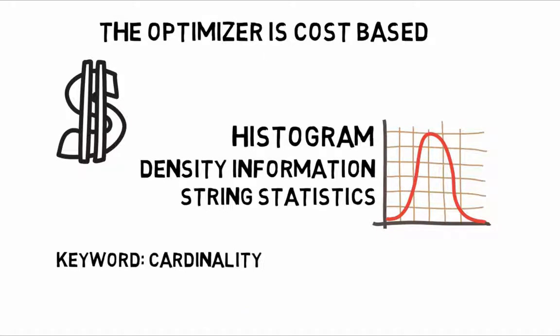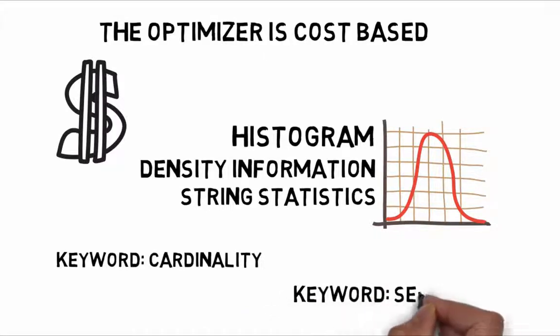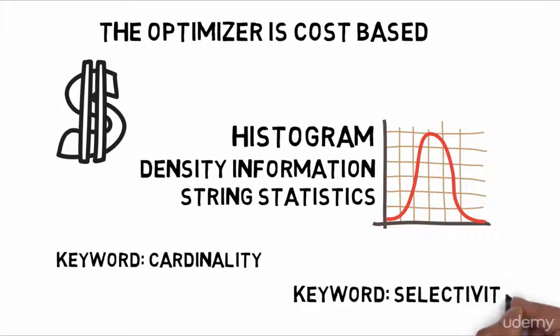A cardinality estimate is the estimated number of records that will be returned by filtering, join predicates, or group by operators. Selectivity, another core concept and key term, is a concept similar to cardinality estimation, which can be described as the percentage of rows from an input that satisfy a predicate. For example, a highly selective predicate returns a small number of rows.